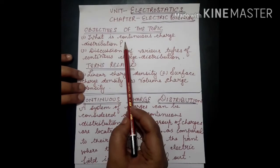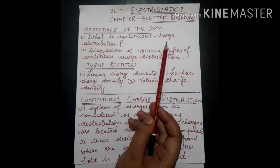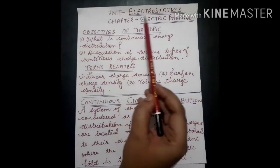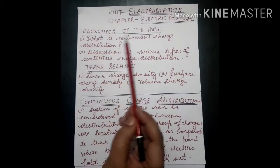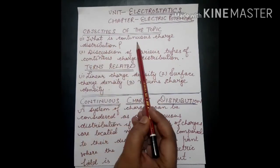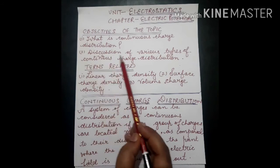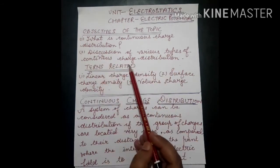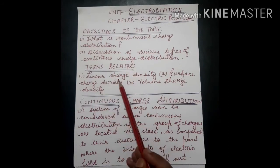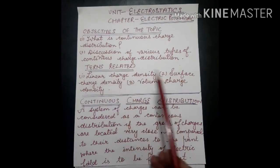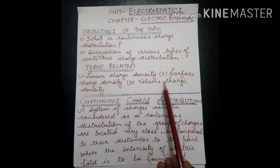Hello students, today we are going to discuss the topic 'Continuous Charge Distribution' from the chapter Electric Potential, unit Electrostatics. The objectives of the topic are: first, what is continuous charge distribution, and second, a discussion of various types. The key terms related to this topic are linear charge density, surface charge density, and volume charge density.